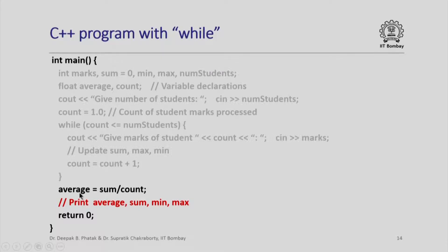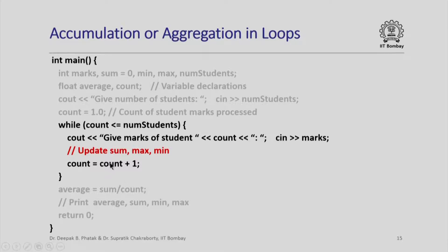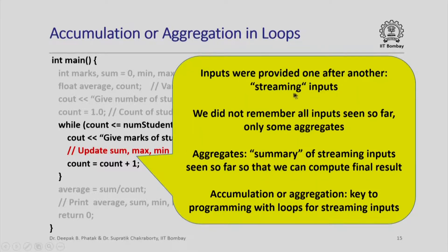After reading all students' marks and computing the aggregates, we compute average as sum divided by count. Since sum is an integer and count is float, the result is float and retains the fractional part. We then print average, sum, min, and max and return control to the operating system. An important observation: inside this loop we are reading marks one at a time — streaming inputs — and we do not remember all inputs, only some aggregates: sum, max, and min. Accumulation or aggregation is key to programming with loops for streaming inputs; you use these summary values to compute the final result.